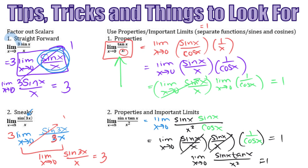All the things we already knew about trig still apply and we want to use them to benefit us. The main tools are these three limits, plus the identities that sine over cosine is tangent and cosine over sine is cotangent. Let's look at some more examples and then wrap up.